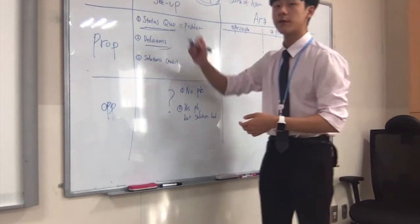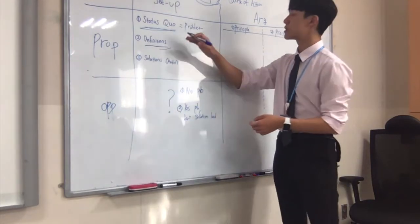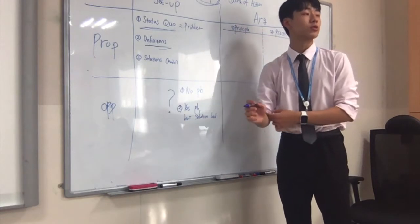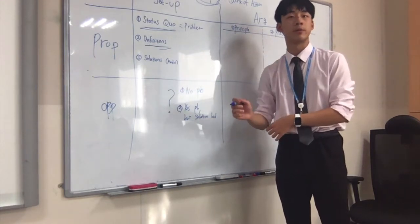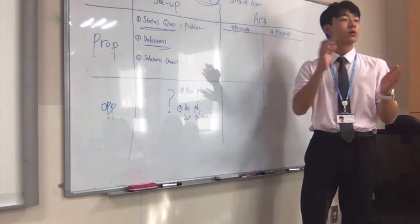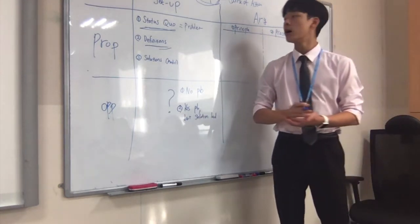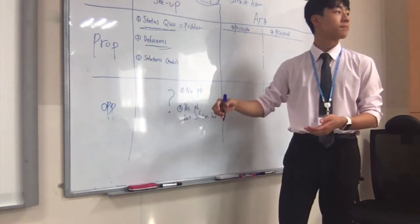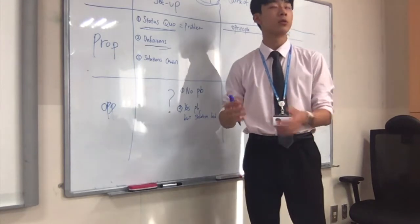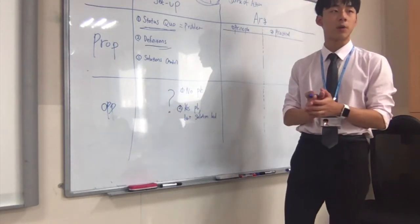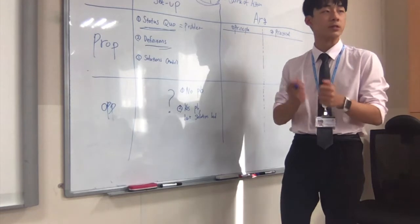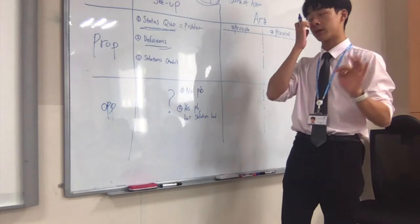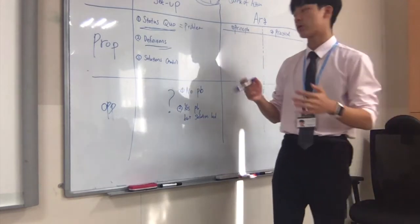The second part of the setup is definitions, where you define some of the important words in the motion. There's really no need to define every single one of them. When debating whether to ban zoos, each side has to agree upon what they're talking about. So you want to define the central terms in the topic. Central terms in 'this house will ban zoos' would be 'ban' and 'zoos,' because these two are probably the most important things determining how the debate is going to unfold.